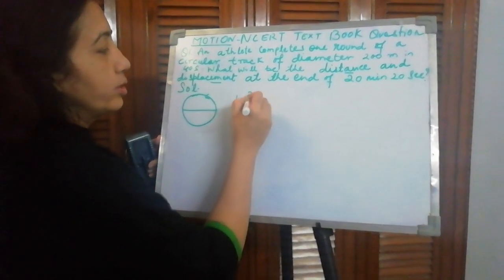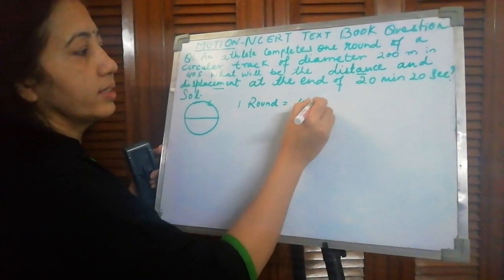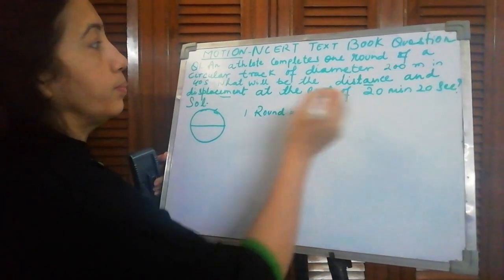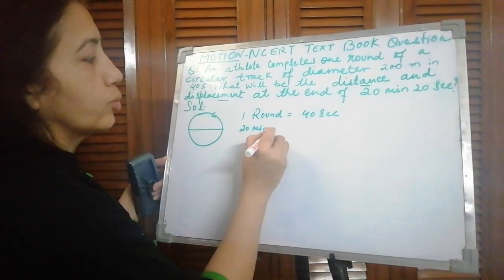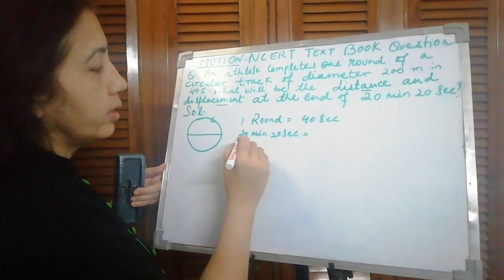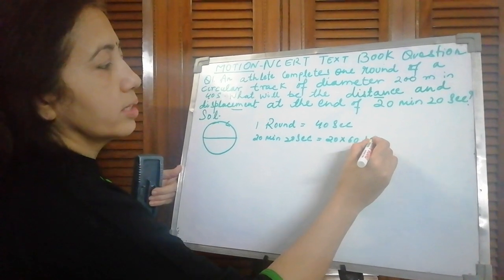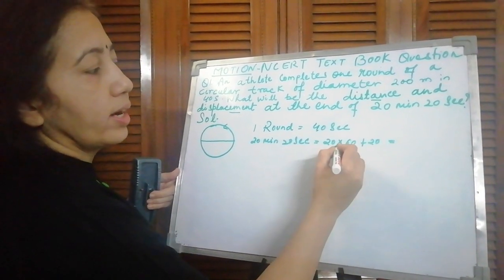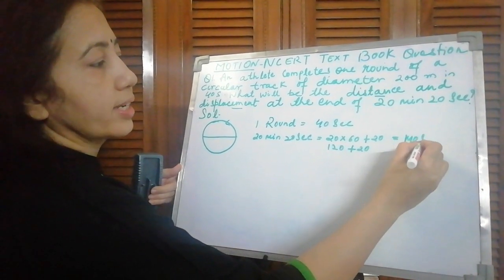One round is in 40 seconds. The athlete took how much time? 20 minutes 20 seconds. Convert this whole thing into seconds. So 20 into 60 plus 20, that is 120 plus 20, equals 140 seconds.